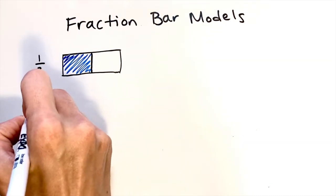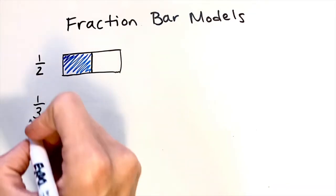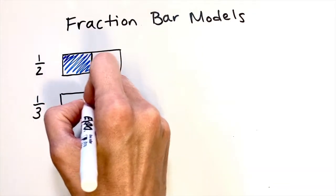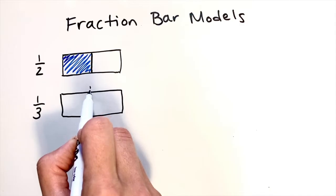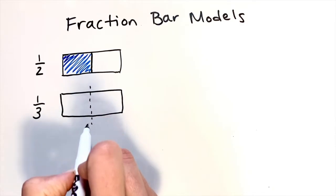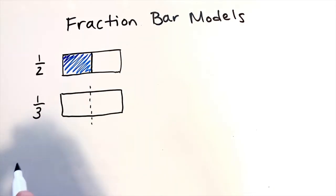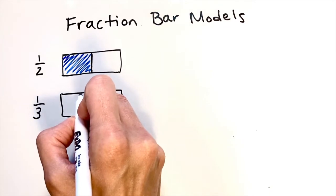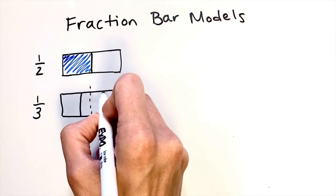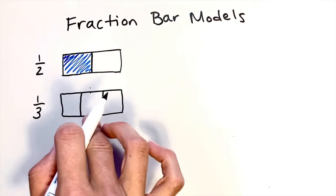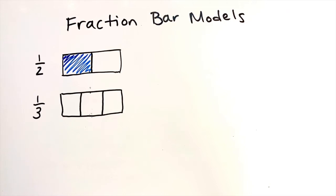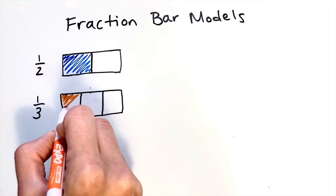Now let's try drawing one third. One third is a little trickier than one half. I'm still going to start with a rectangle, and to draw one third using a bar model, first I imagine an imaginary line going down the middle of my rectangle. I need to draw two lines in order to cut this into three pieces — one goes a little to the left of my imaginary center line and the other goes a little to the right. This is an estimation, but I'm trying to make the three pieces of the bar the same size. To show one third, I'll color in one of them.